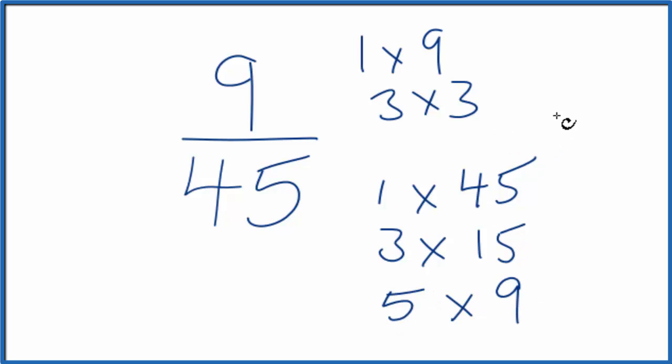So the greatest common factor here is going to be 9. This is common between both of these numbers, the numerator and the denominator.